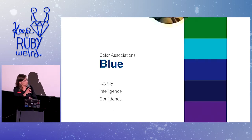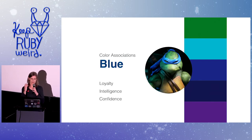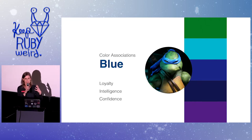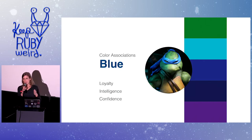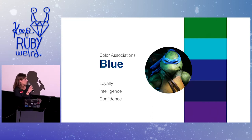Then we have blue and Leonardo. Blue is definitely one of these colors that is very calm and stable — often associated with composure and stability. Leonardo is the one in the group who is very level-headed. He always thinks through his decisions before he acts, navigating conflicts amongst the group. He's the leader. Terms associated with blue: loyal, intelligent, and confident. He's very calm about it — a very soothing character.